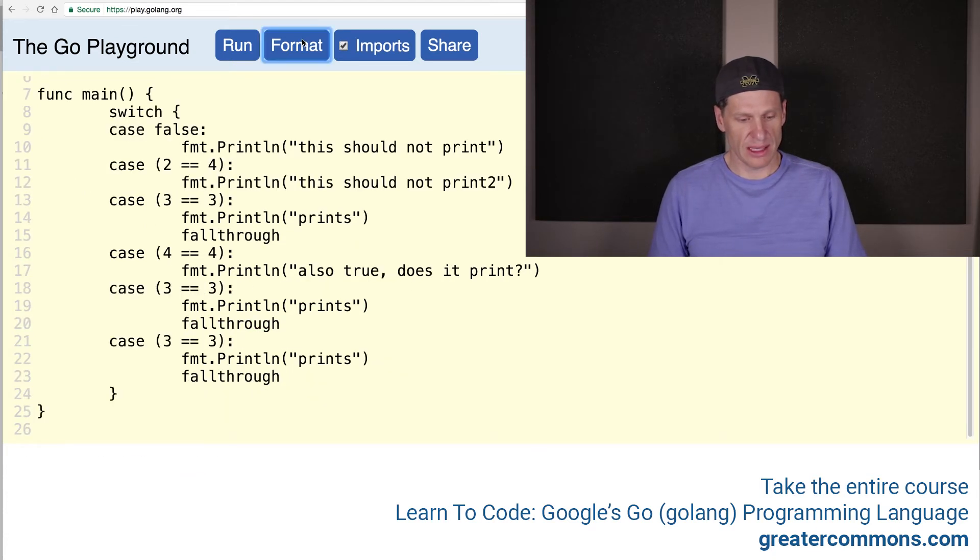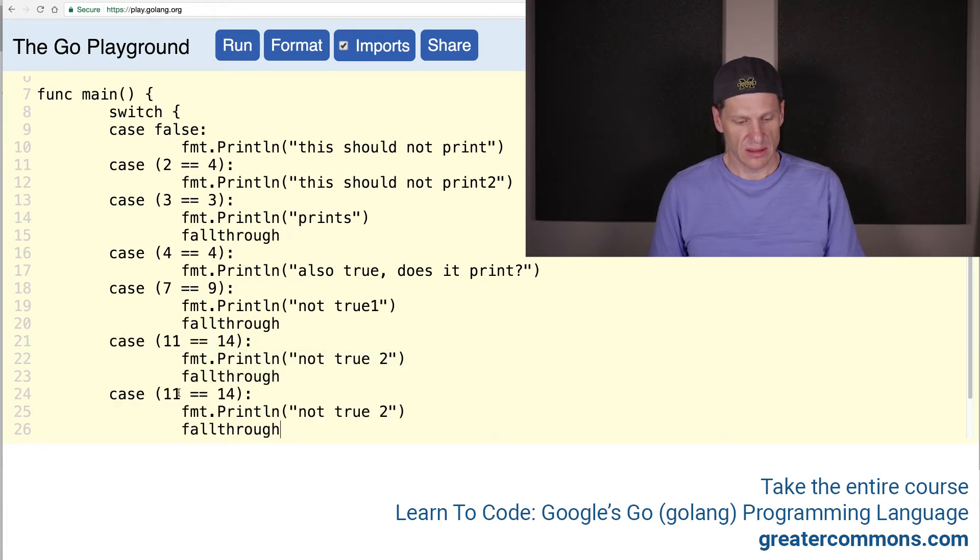And format. I'll make this seven equals nine. I'll call it not true. I'll call it not true one. And I'll make this one 11, 14, not true two. And I'll make this one 15, 15. True 15. Cool.